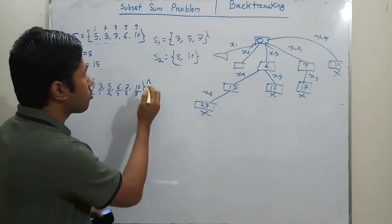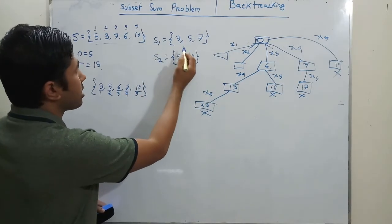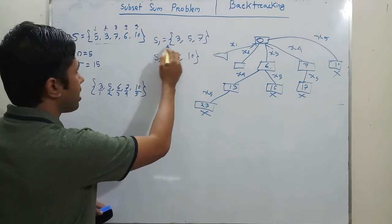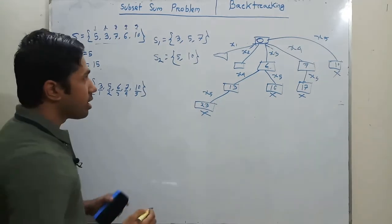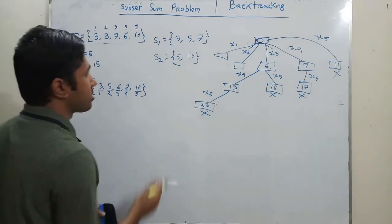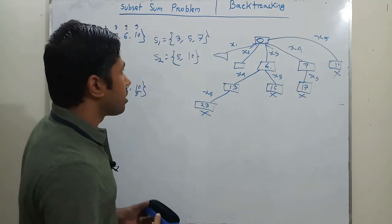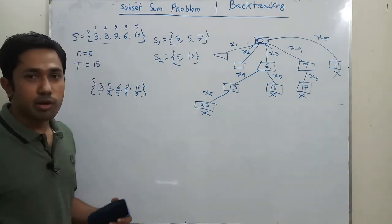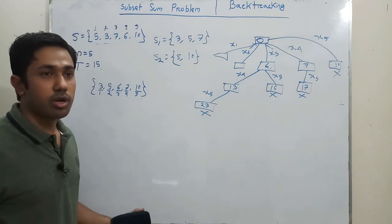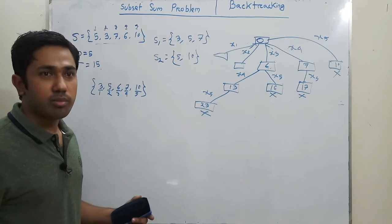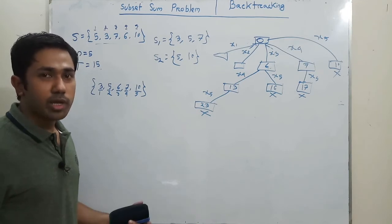By using backtracking we have found a total of two solutions: S1 = {3, 5, 7} and S2 = {5, 10}. In this way, by using the constraints — that is the bounding function — in the backtracking approach, we can solve the problem efficiently.